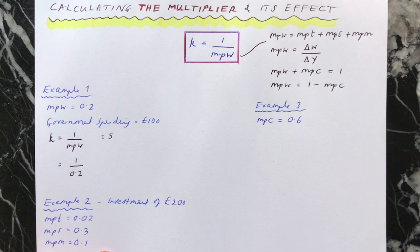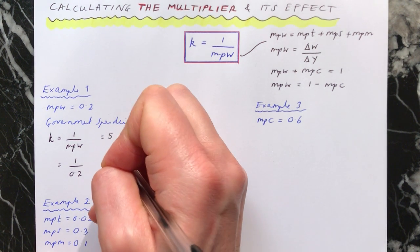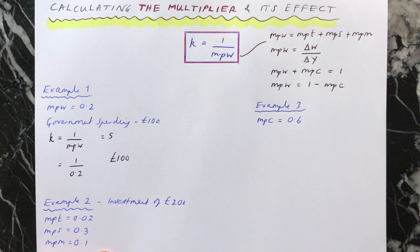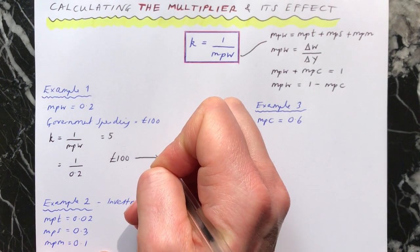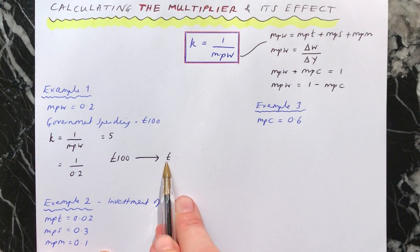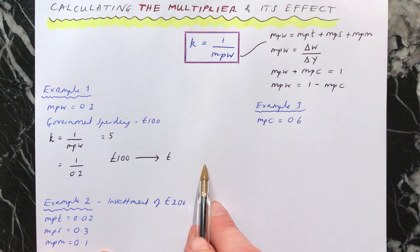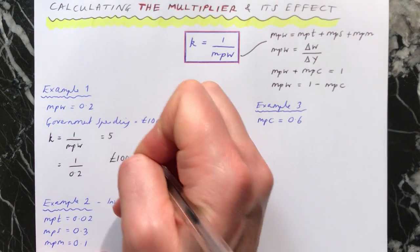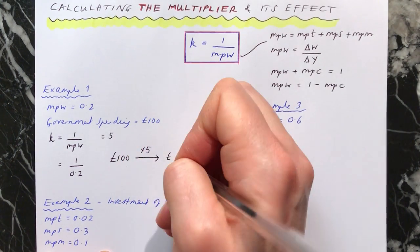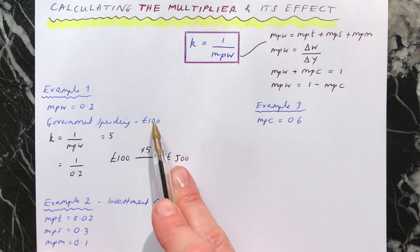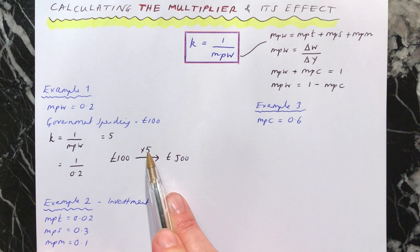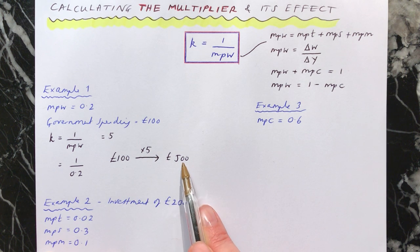Then we need to find out what's the impact on the economy. We know that £100 went in as an injection — the government spending — and we want to know what happened to national income overall. We do £100 multiplied by 5, so the final impact on national income is £500. Because £100 was injected and the multiplier was 5, the final impact is £500.